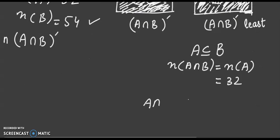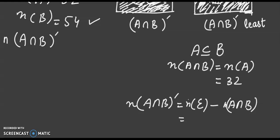Since A intersection B whole complement means universal set minus A intersection B, therefore when we consider the number, we write n for all of these. It is already given that the number of elements in universal set is 68, whereas the number of elements in A intersection B we have found is 32. So in this way, 68 minus 32 gives us 36.